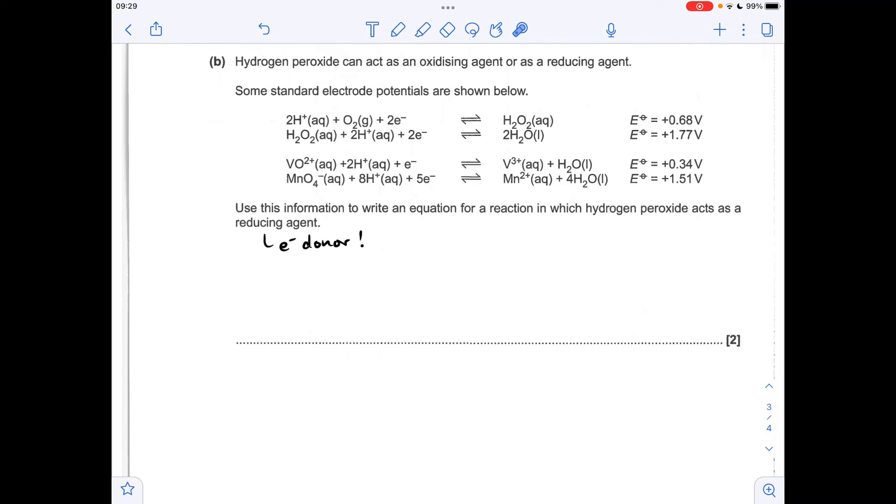Part B now, so this is all about electropotentials. So we've got to write an equation for a reaction where hydrogen peroxide is acting as a reducing agent. In other words, an electron donor.